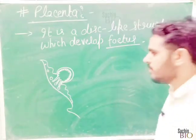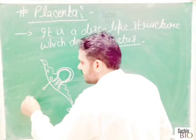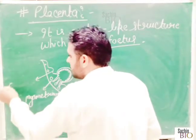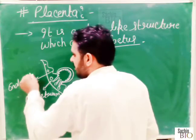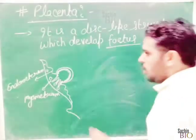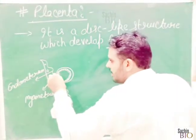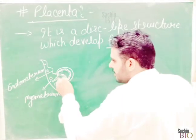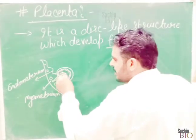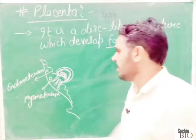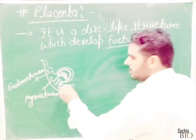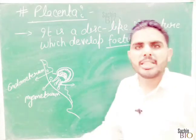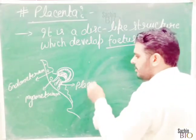This is the myometrium wall, and this is the endometrium wall. The young one will develop here as a cell mass. This cell mass can make a baby. This coronary wall is called interdigitation, or placental villi — this is called placental villi.